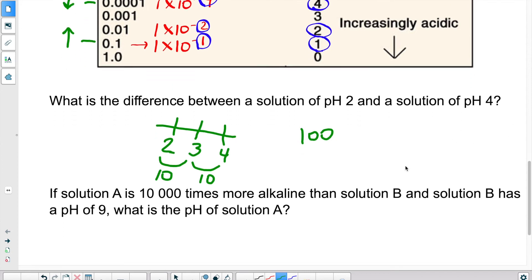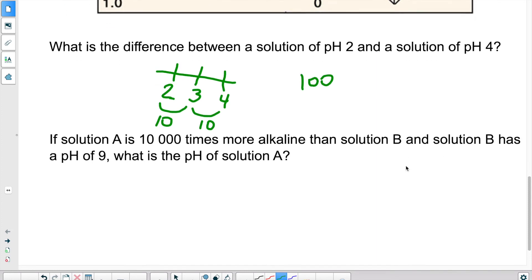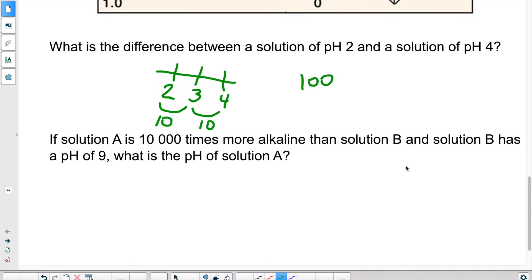Now, if we go here, next question, if solution A is 10,000 times more alkaline than solution B, and solution B has a pH of 9, what's the solution A's pH? So again, I can't draw straight, but bear with me. So I have pH 9.